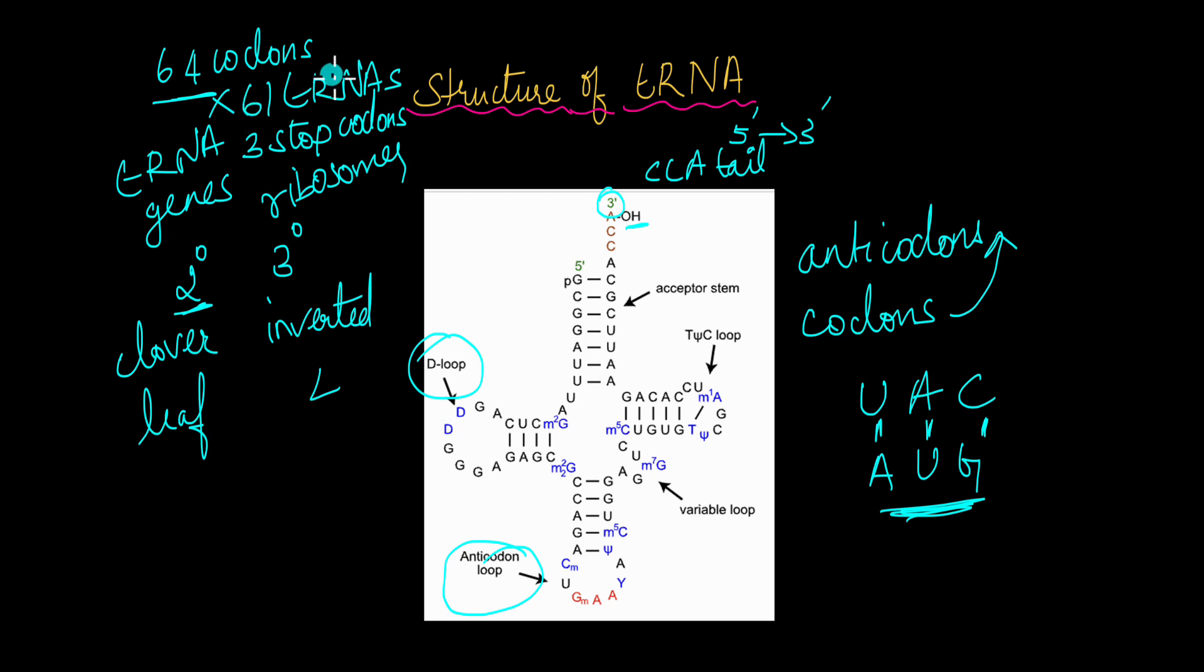Research suggests that there are actually only about 31 tRNAs for all the 61 codons. This is due to a property known as the wobble hypothesis. And what this wobble hypothesis says that this anticodon loop here, especially the first nucleotide in this anticodon loop, can form non-Watson-Crick base pair. What is a Watson-Crick base pair? First of all, that is a regular base pairing like A pairs with U and G pairs with C. A non-Watson-Crick base pair is something that is different from this regular one.